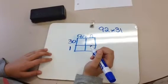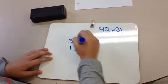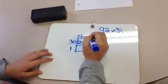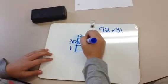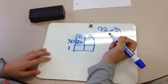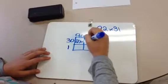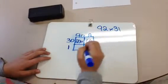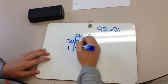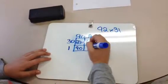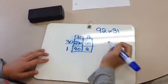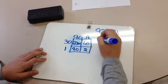30 times 90 is 2,700, and 30 times 2 is 60, and 1 times 90 is 90, and 1 times 2 is 2. And now I'm going to add them all together.